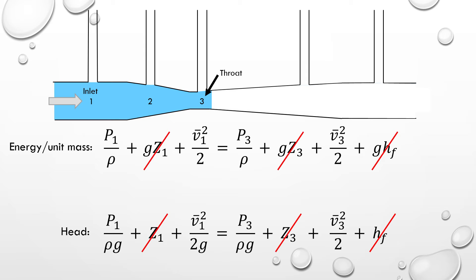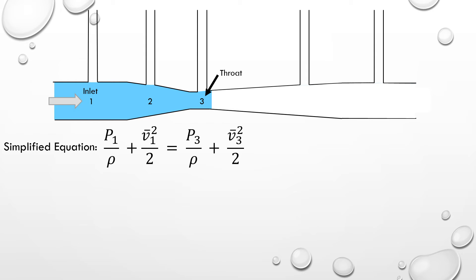We can also remove the potential energy or gravity head, since we have no changes in height. We know from the continuity equation that velocity at the entrance of the venturi must be much lower than that at the throat because of the decrease in cross-sectional area.